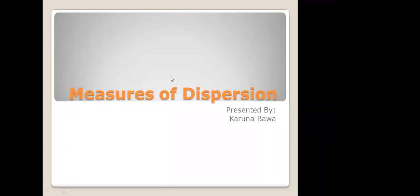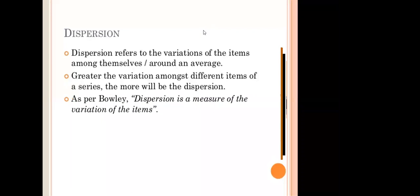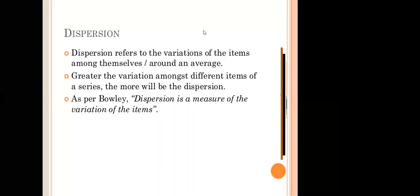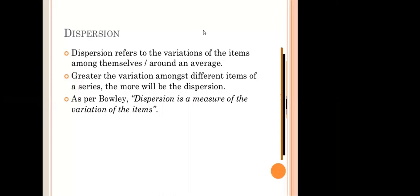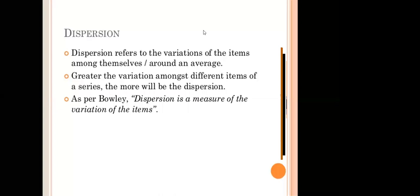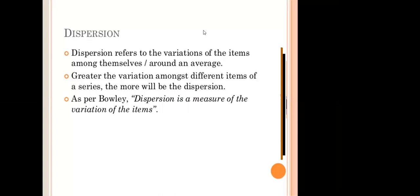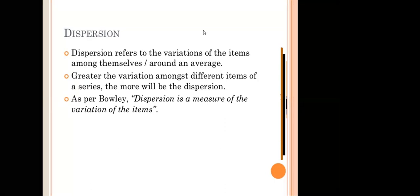Today we start with a new topic: measures of dispersion. Dispersion refers to the variation of items among themselves around an average. Greater the variation among different items of a series, the more will be the dispersion. Dispersion is a measure of the variation of the items. The various measures of central tendency or average discussed in the previous chapter give us a single value that represents the entire data.